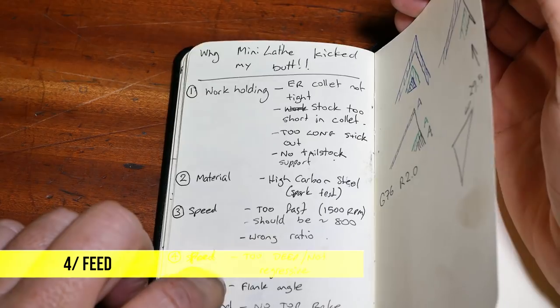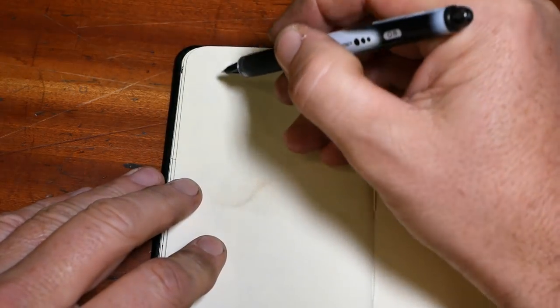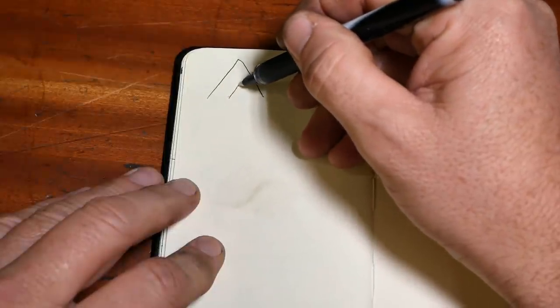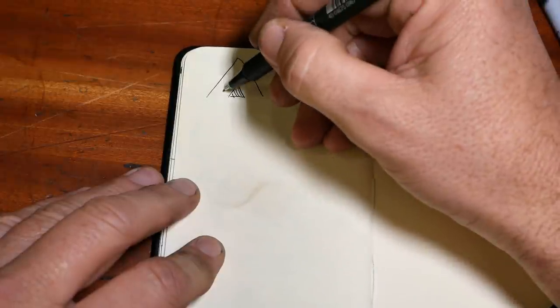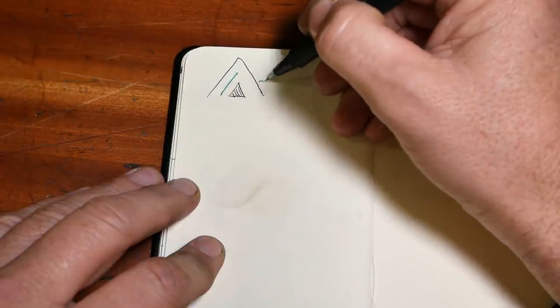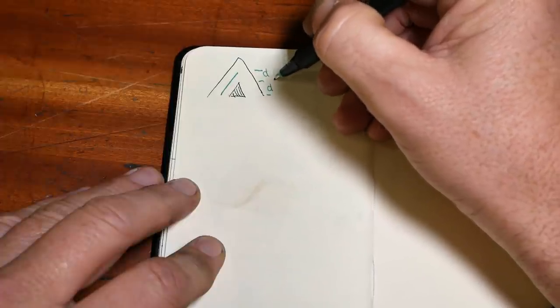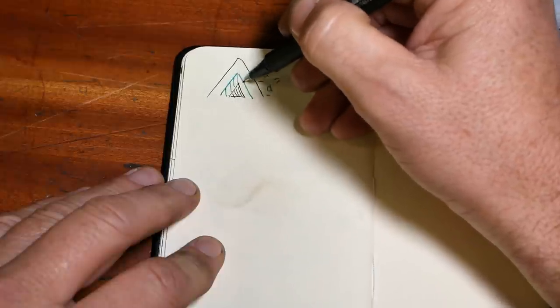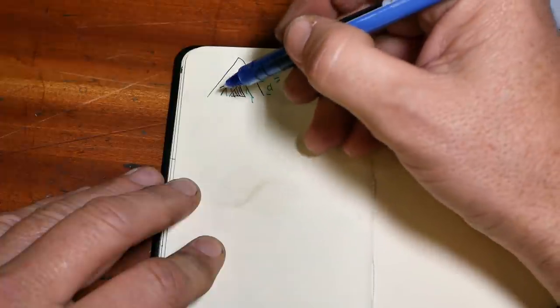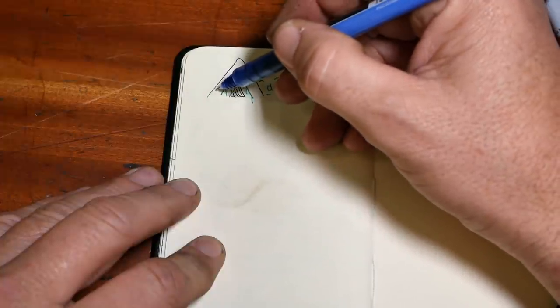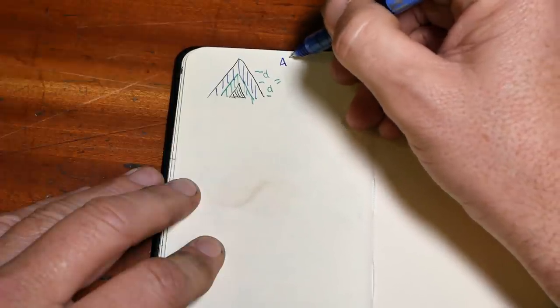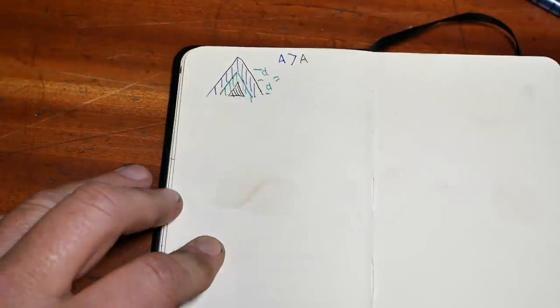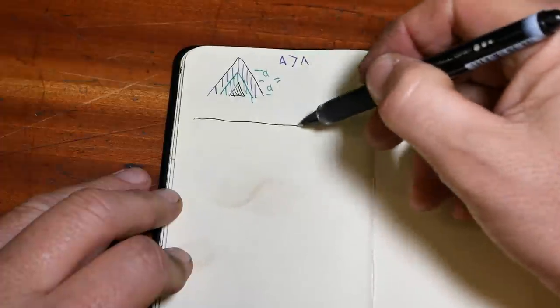Here with respect to feeds being too deep and not regressive and the flank angle, what I mean is this. When you're cutting a thread, in this case 60 degrees, the worst way of doing it is just straight infeed. So what you've got here is the first pass takes some area of cut. The second pass going in the same depth, those can be equal, takes a much deeper cut. And then as the thread progresses, in this case let's say we're taking three passes, the area of cut of the third pass is much much greater than the area of the first pass.